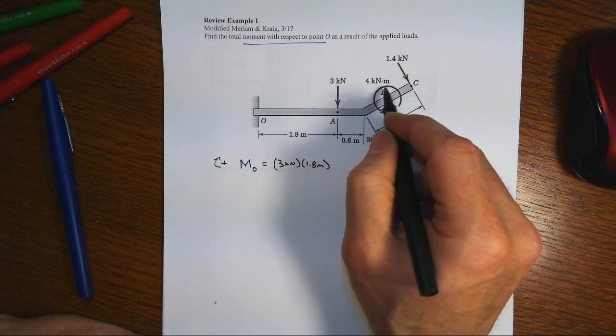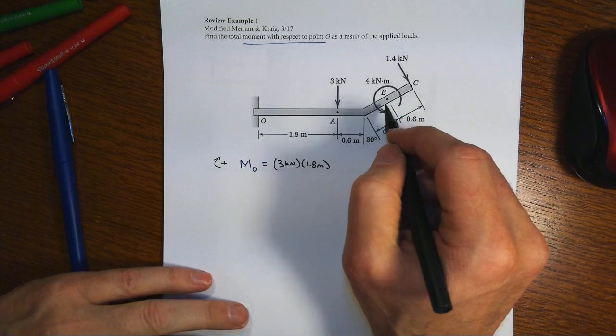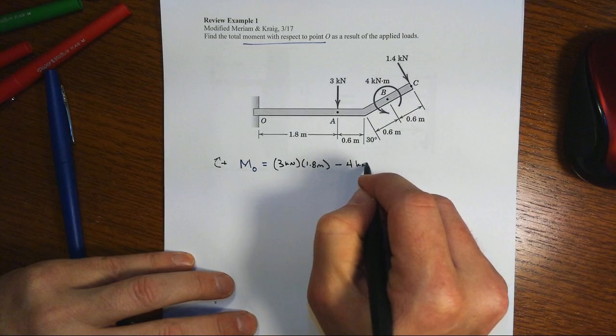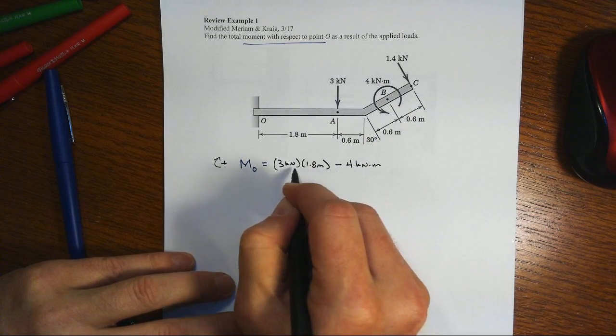And then we have a 4 kilonewton meter - that's already a couple or a moment, so we'll just subtract off that 4 kilonewton meter. Same units as we had before, they do need to be the same.